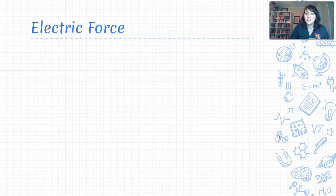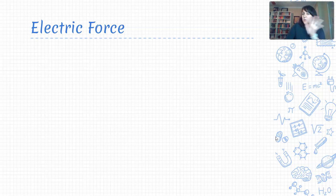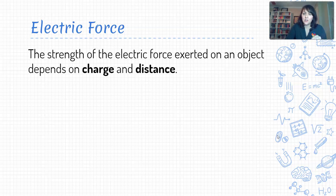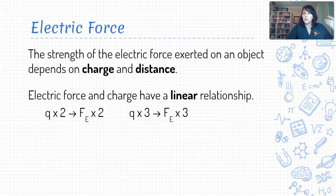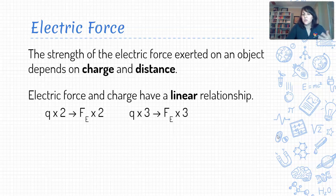Now let's get into the idea of electric force. We've established in our investigation that electric force varies with two main factors: it varies with charge and it varies with distance. The relationship between charge and electric force is linear, which means that if we double the amount of charge of our source or test charge, our electric force doubles as well. If we triple the amount of charge — triple the number of Coulombs — then we are tripling the electric force as well.